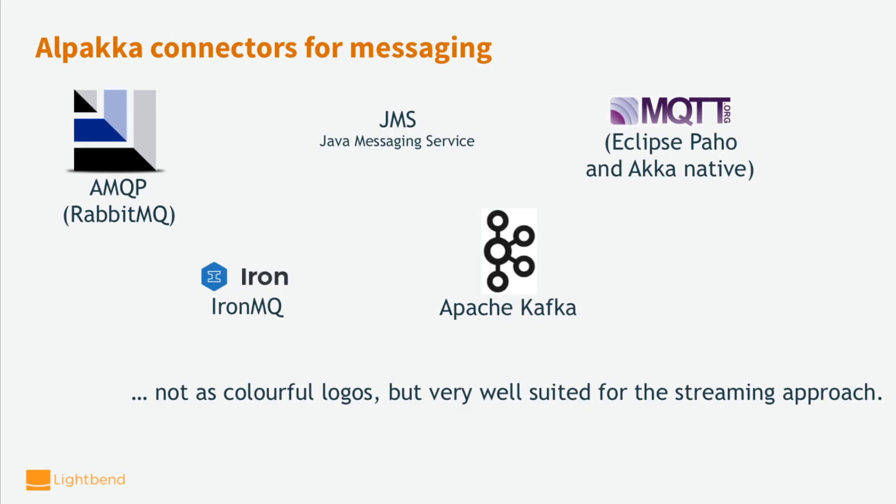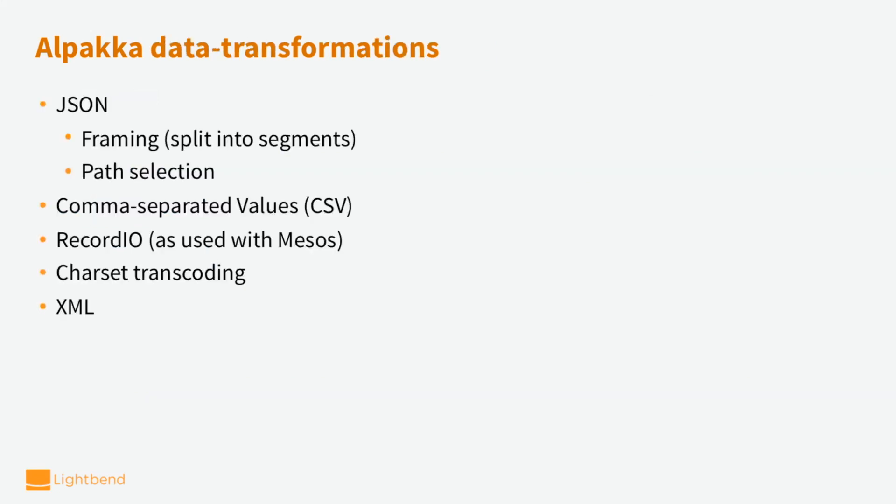Alpaca connectors for messaging are available as well. Messaging is of course very suitable for the streaming data approach, and it becomes quite natural to use Akka Streams here as well. Another group of things in Alpaca are data transformations, where you can take a stream of binary data coming from some source and make sense of it as JSON, comma-separated values, RecordIO records, or use charset transcoding from different charsets to new ones. There is also an XML parser which gives you SAX parser events from XML in the form of a stream.